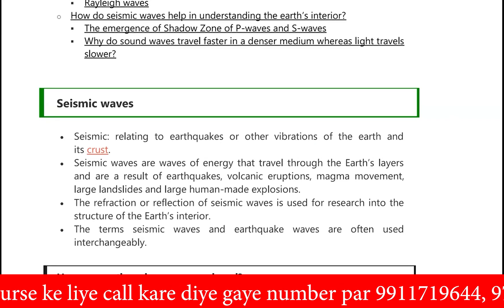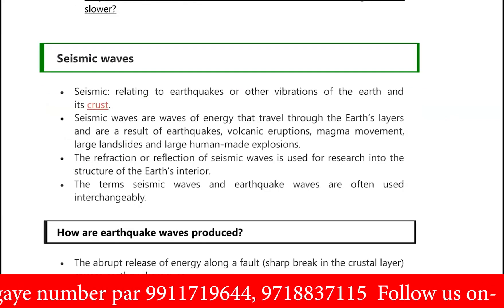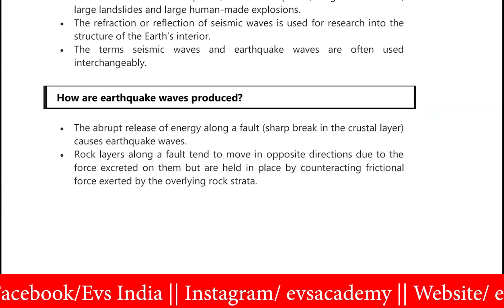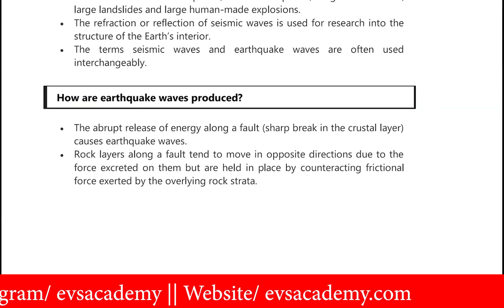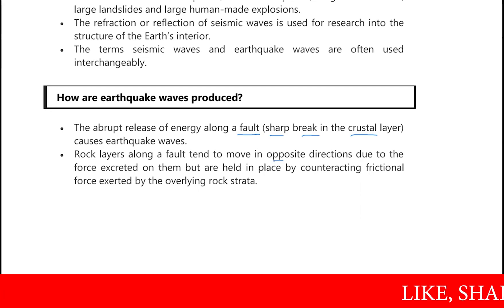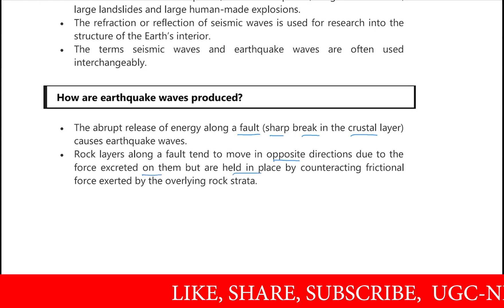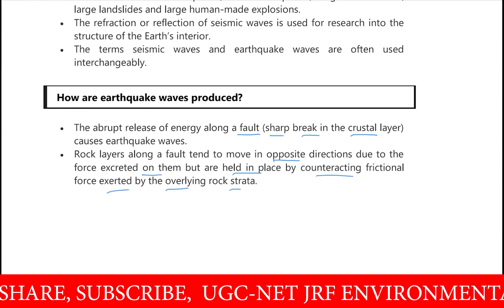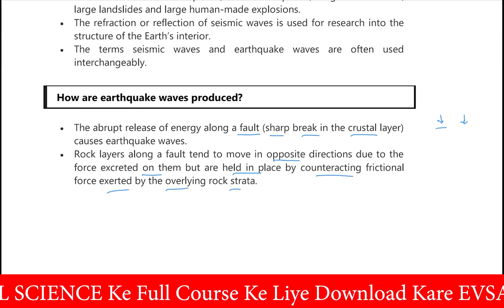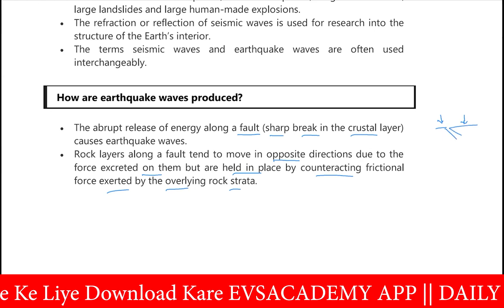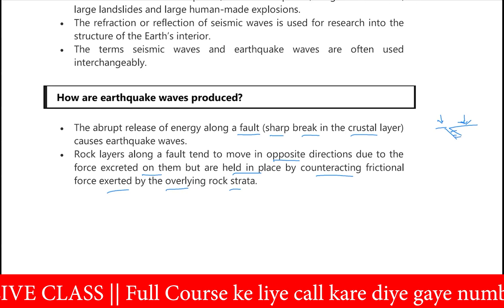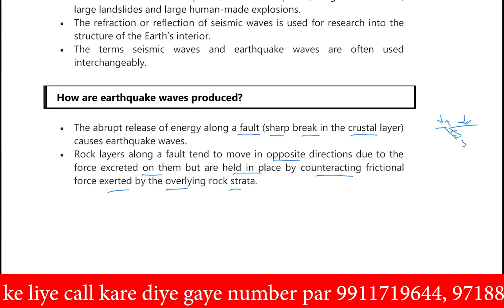Next topic: how earthquake waves are produced. The earth's layer is made up of multiple tectonic plates, and along these plates we have faults — sharp breakup points between the crustal layers. Rock layers along a fault tend to move in opposite directions due to the force exerted on them, but are held in place by counteracting frictional force from the overlying rock strata. Whenever the external force exceeds this frictional force, sliding movement starts, leading to earthquake formation.